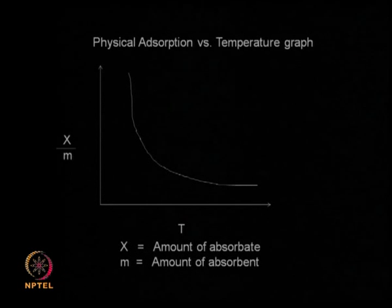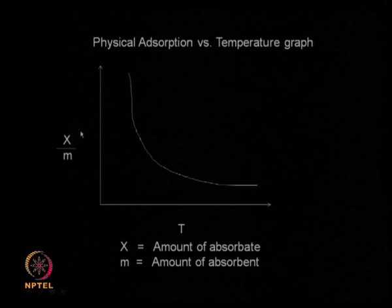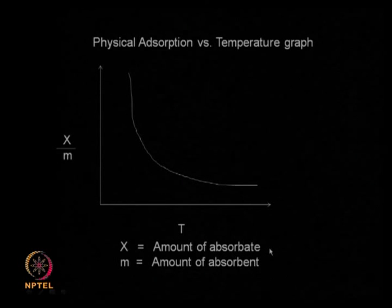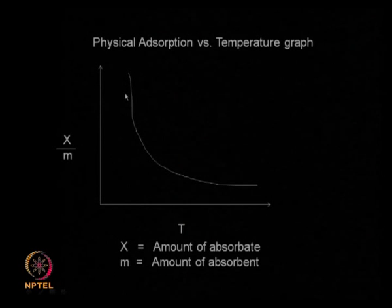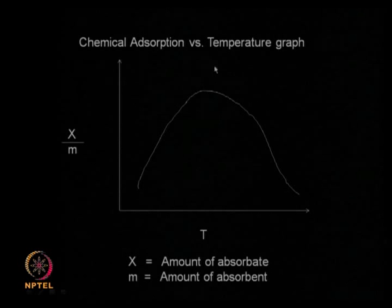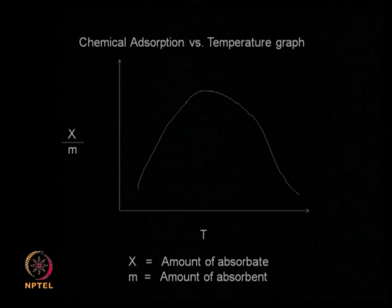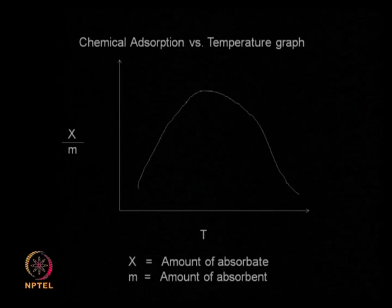Physical adsorption decreases as temperature increases because it involves weak forces and occurs below the boiling point of the solute, so x/m (amount of adsorbate per unit adsorbent) decreases with temperature. For chemical adsorption, the amount adsorbed initially increases with temperature and then later falls as the adsorbed solute starts to desorb.